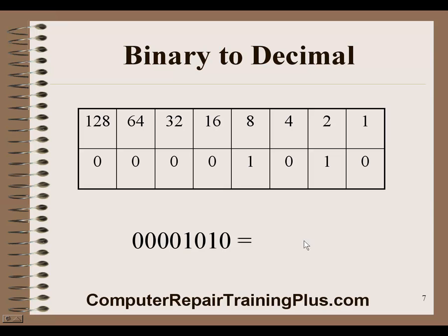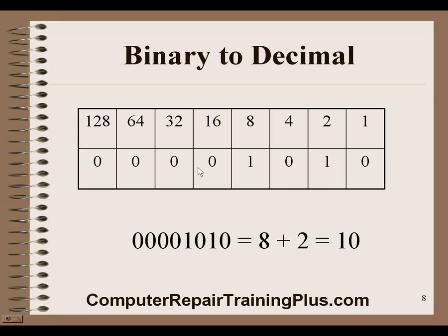Let's do another one. Here we have 4 zeros, a 1, a 0, a 1, a 0. Putting this into our block, we have the 8 and the 2 set. All we have to do is bring down the 8, bring down the 2, add them together, and we get 10. So this 8-bit binary number is equivalent to decimal 10. You can see this isn't too hard to do.